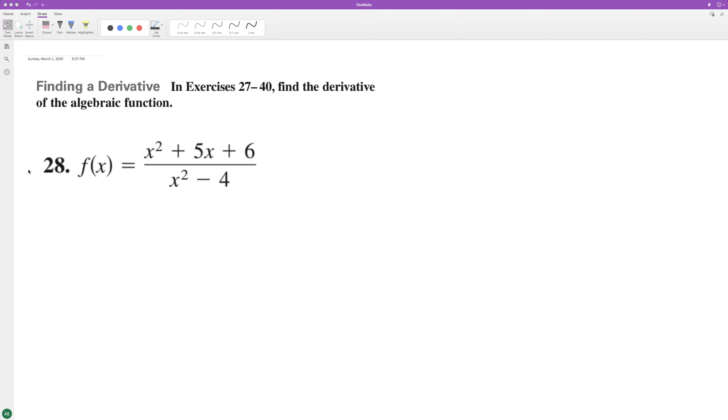of the following. Let's use the quotient rule. So starting off here, f prime of x is going to be equal to the derivative of the numerator, which is going to be 2x plus 5 times the denominator,